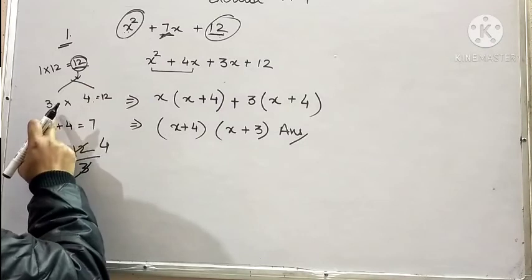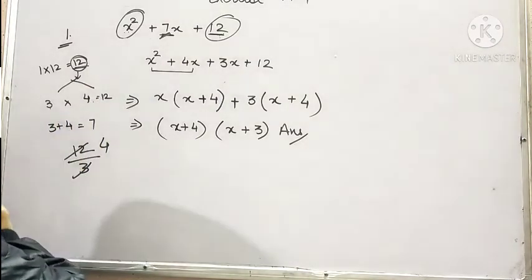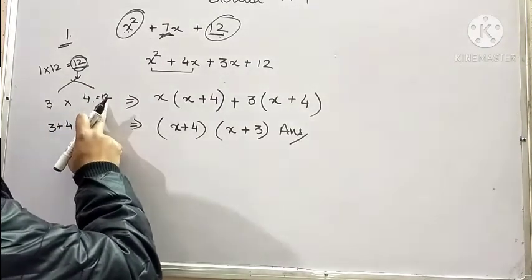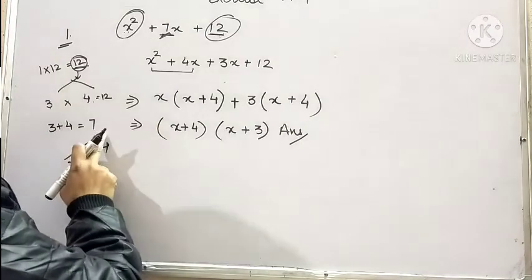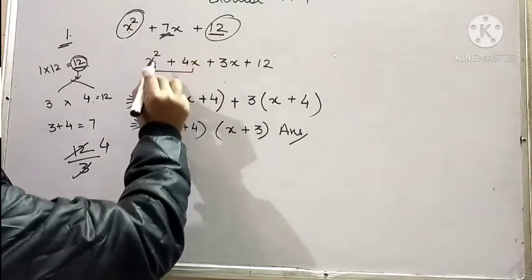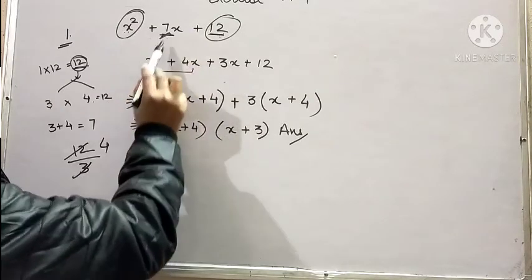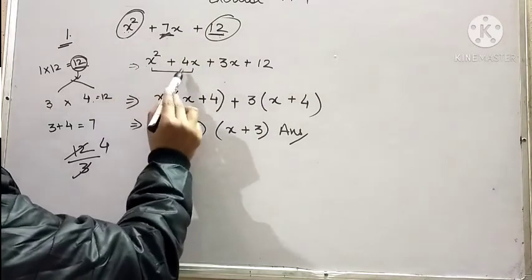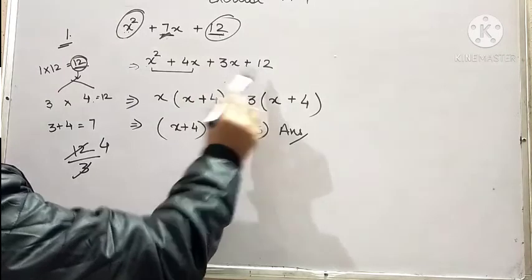So we find that 12 can be factorized as 3 and 4, which is equal to 12 and the sum is equal to 7. So we split the middle term in a manner such that we obtain x square plus 4x plus 3x plus 12.